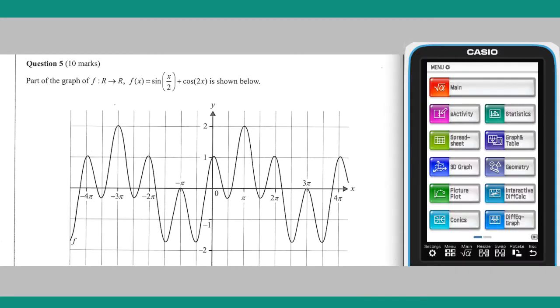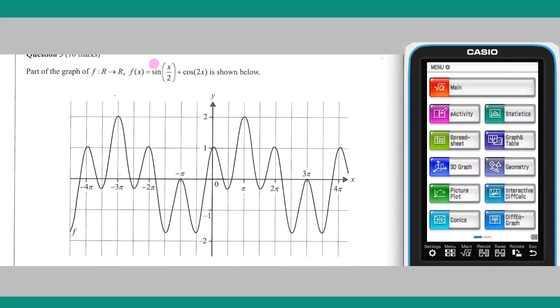Question 5 concerns itself with a function f of x, which is comprised of a sine and a cosine term.